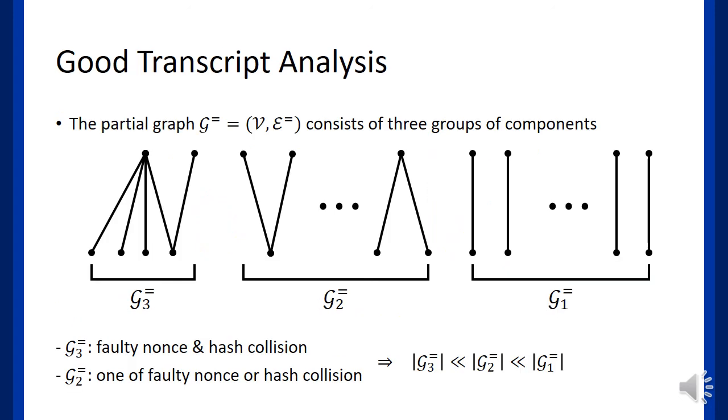What is left is to analyze good transcripts by applying mirror theory. For a good transcript, one can observe that the partial graph G_eq consists of three groups of components. G_3 is the group of components that contains length 3 trails so that there should be both faulty nonce queries and hash collisions. G_2 is the group of components that contains length 2 trails, so each component has either faulty nonce queries or hash collisions. Therefore, we figure out that the number of components in G_3 is much smaller than those in G_2, and the number of components in G_2 is much smaller than those in G_1.